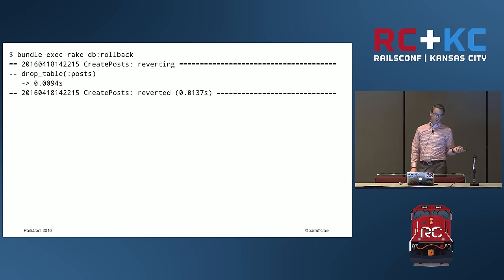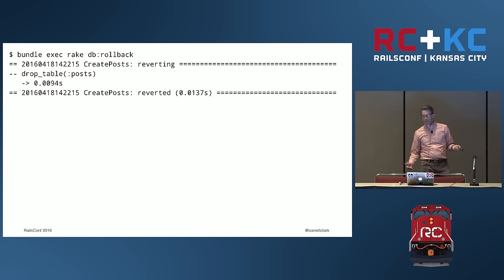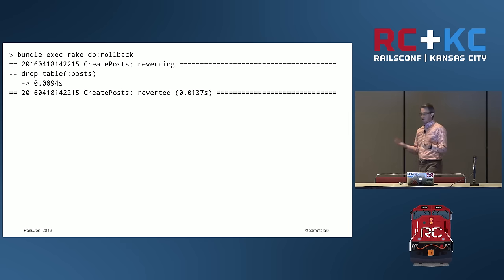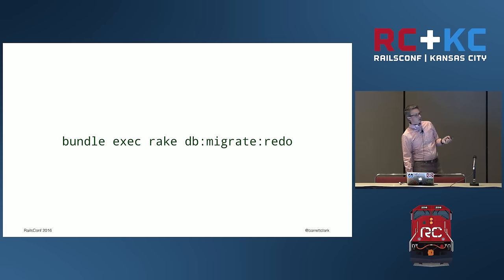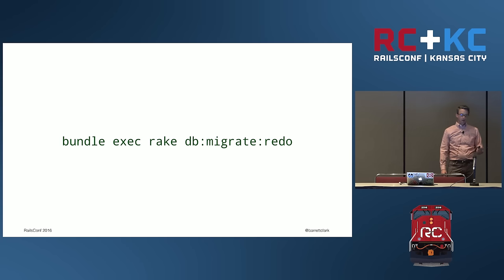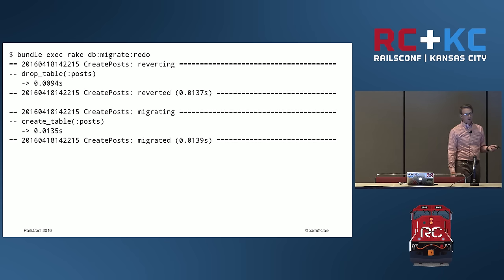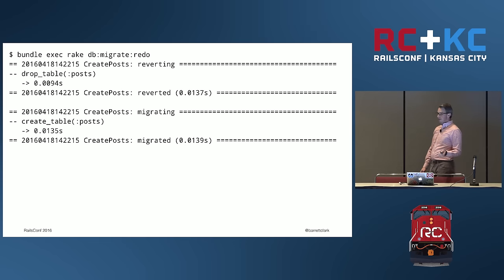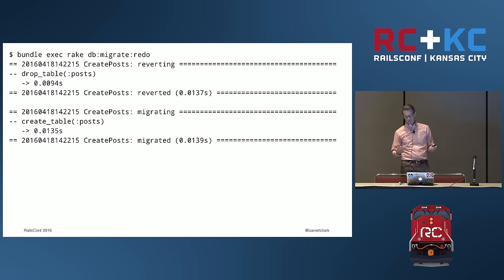We do `bundle exec rake db:rollback` and it says we've got this create_posts migration that we're going to revert, so we're going to drop the table. Dropping a table deletes all the data as well — but that's okay, this is development. You wouldn't do this in production. The other thing we can do is `bundle exec rake db:migrate:redo`. It'll roll back and then roll forward again — drop the table and recreate it — so you'll have a fresh table with all the columns but none of the data. This is super handy.